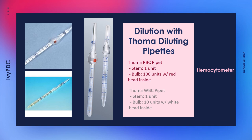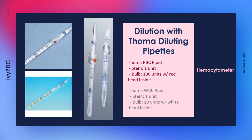There are two types of Thoma diluting pipettes: the RBC pipette and the WBC pipette. Both can contain up to one unit of fluid inside their stems. The RBC pipette is bigger and can contain up to 100 units of fluid in its bulb, while the WBC pipette can only contain up to 10 units. Because of this, the RBC pipette can perform higher dilutions. The total units for an RBC pipette is 101, while the total for the WBC is only 11.